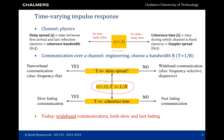If the symbol slot is on the same order or less than the delay spread, we have wideband communication because there will be inter-symbol interference — this is also called frequency selective or dispersive communication. The choice of symbol slot duration with respect to the coherence time leads to slow fading when the symbol slot duration is much less than the coherence time, meaning many symbols will see the same channel. If the symbol slot duration is on the order of the coherence time, we have fast fading, because different symbols will see different channels and the channel can change almost symbol by symbol.